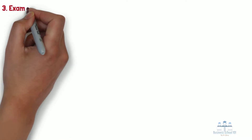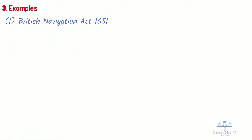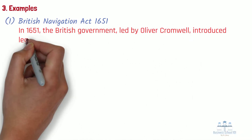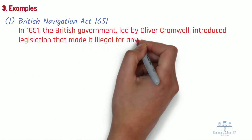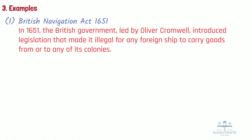Section 3: Examples. Mercantilism is a form of protectionism that was practiced throughout the Age of Discovery, 16th–18th centuries. Here are a few notable examples. Number 1: British Navigation Act 1651. In 1651, the British government, led by Oliver Cromwell, introduced legislation that made it illegal for any foreign ship to carry goods from or to any of its colonies. All trade was to be conducted by a British ship with a British owner, master, and majority crew.